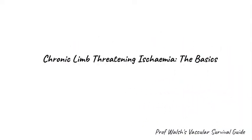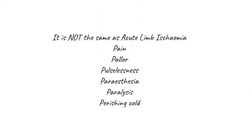In this video we're going to talk about chronic limb-threatening ischemia. Students tend to confuse it with acute limb ischemia, which is the classic story of a patient presenting with sudden onset pain, pallor, pulselessness, paresthesia, paralysis, and perishingly cold leg — the classic six Ps. Acute limb ischemia is an acute surgical emergency and a different entity; we'll cover it more completely in another video.